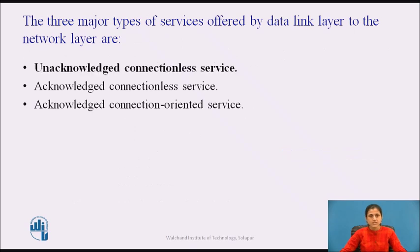Unacknowledged connectionless service consists of having the source machine send independent frames to the destination machine without having the destination machine acknowledge them. Ethernet is a good example of a data link layer that provides this class of service. No logical connection is established beforehand or released afterwards. If a frame is lost due to noise on the line, no attempt is made to detect the loss or recover from it in the data link layer. This class of service is appropriate when the error rate is very low, so recovery is left to higher layers. It is also appropriate for real-time traffic such as voice, in which late data are worse than bad data.